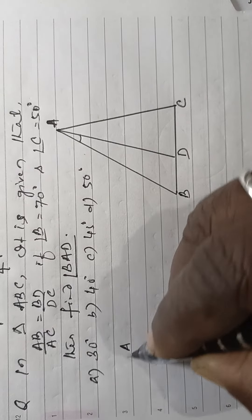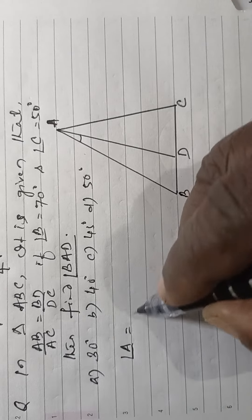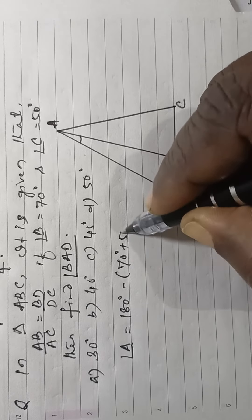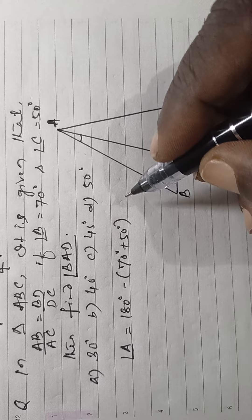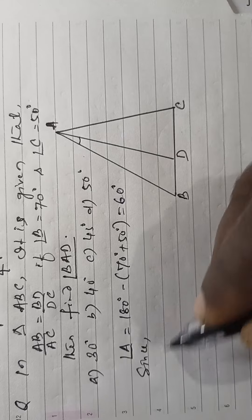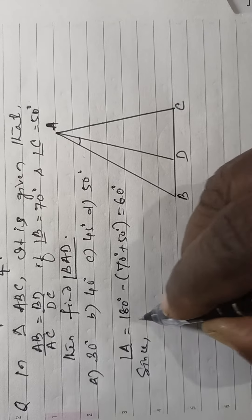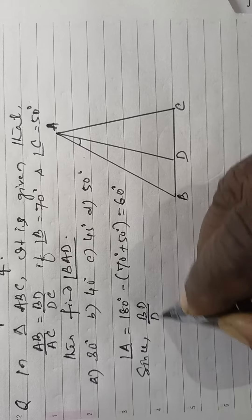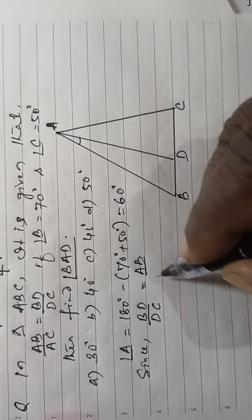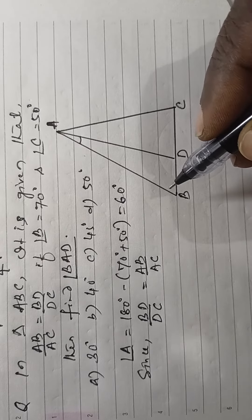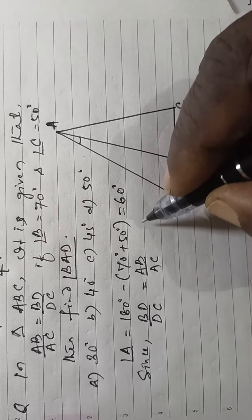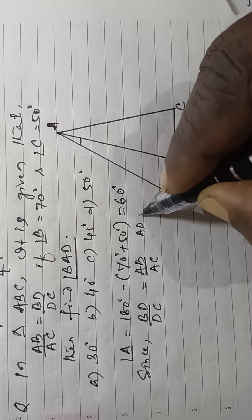Angle A is equal to 180 degrees minus 70 degrees plus 50 degrees, which equals 60 degrees. Since BD by DC is equal to AB by AC, it means AD is the bisector of angle A.